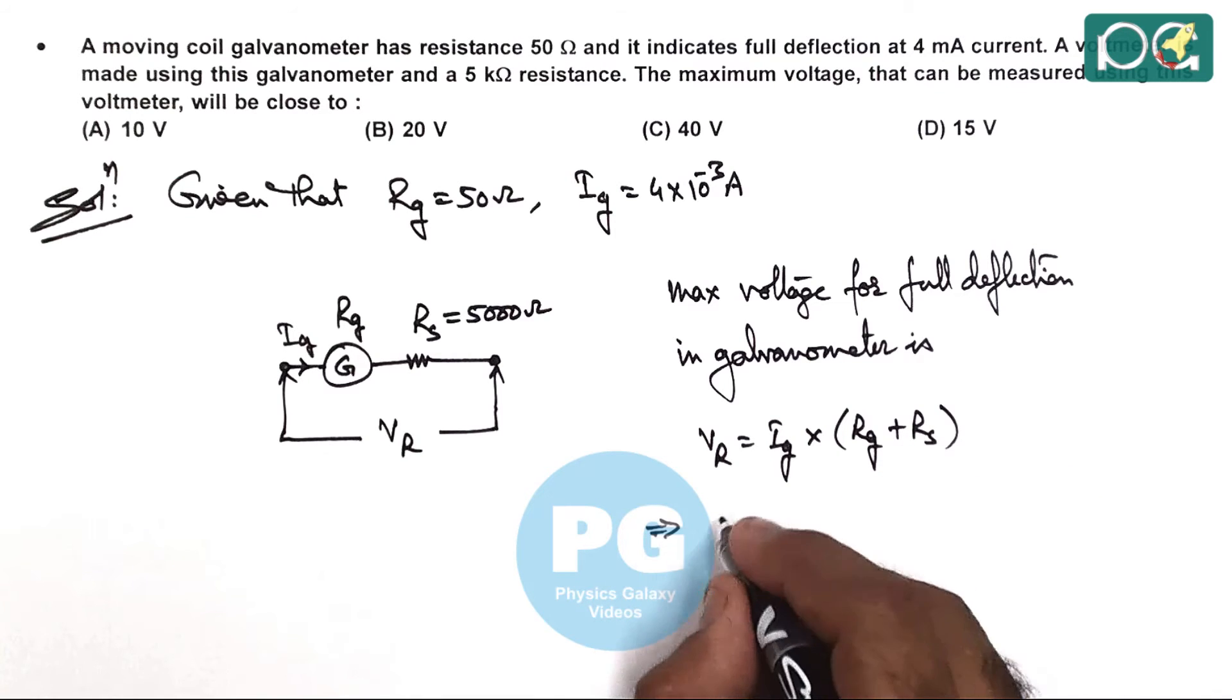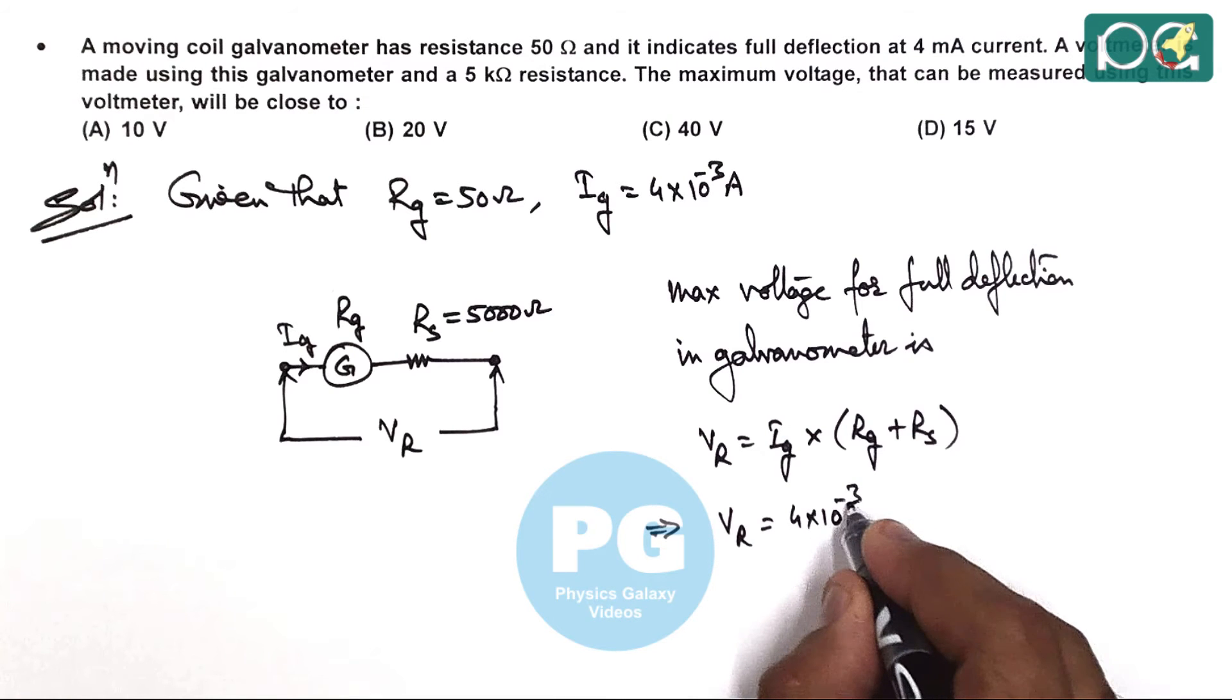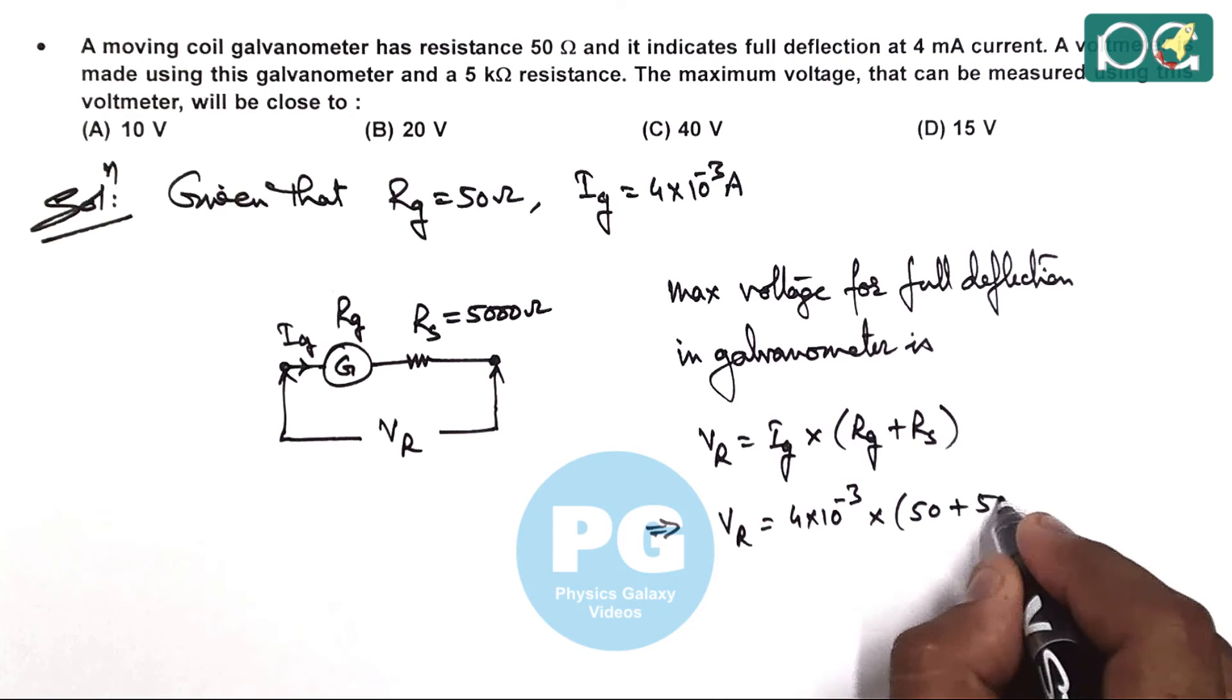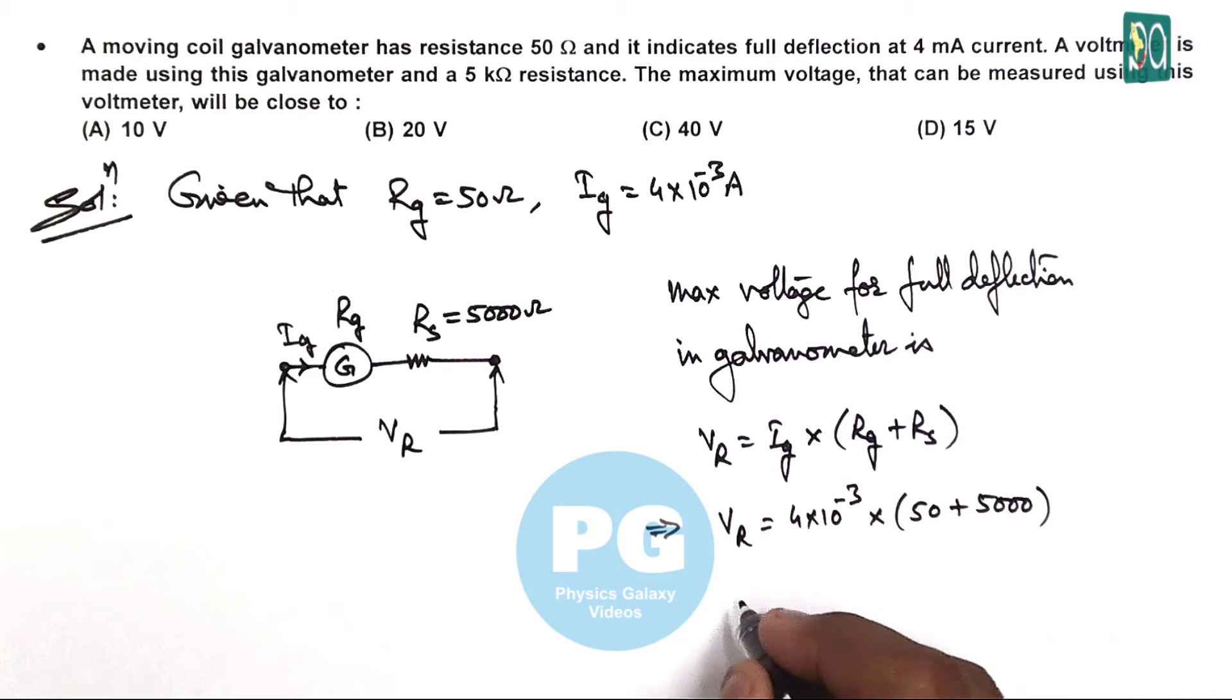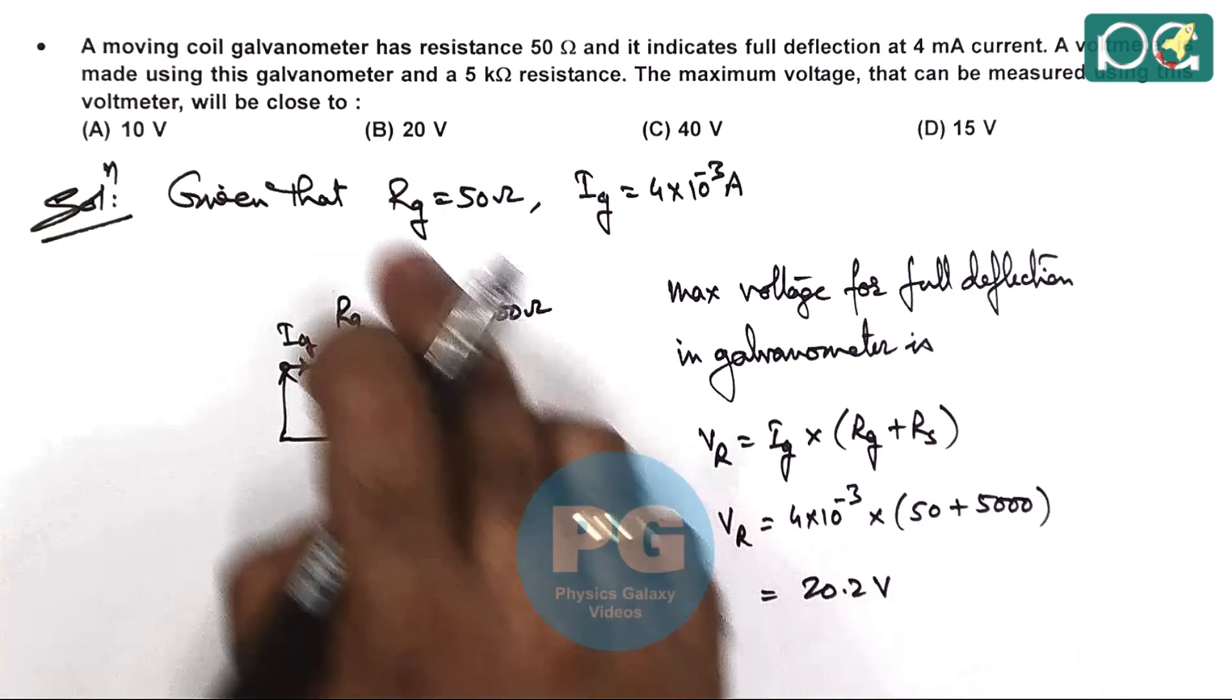So here the range we are getting is 4 into 10 to the power minus 3 multiplied by 50 plus 5000. Simplifying this gives us a value of 20.2 volt. So this is close to option B.